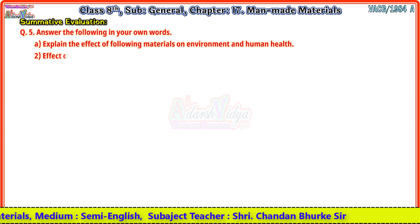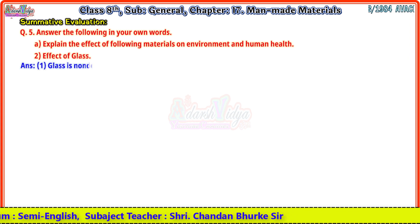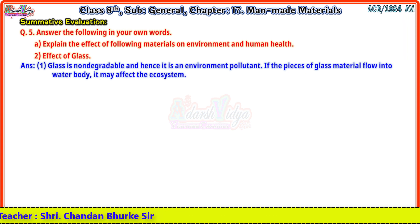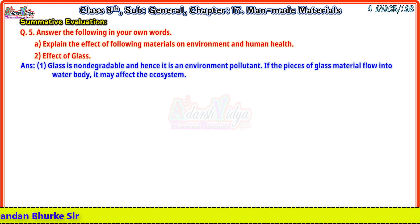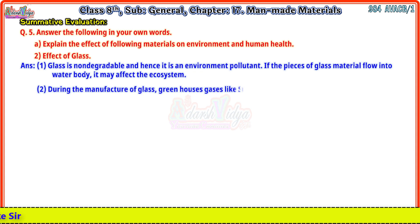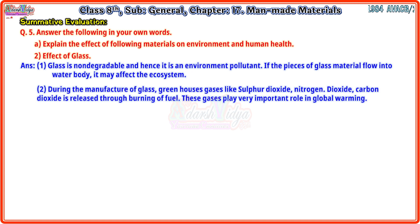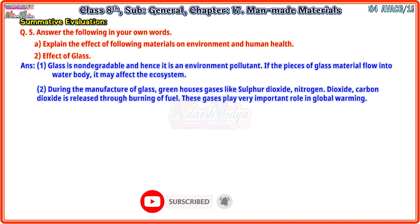Second: Effect of glass. (1) Glass is non-degradable and hence is an environmental pollutant. If pieces of glass material flow into a water body, it may affect the ecosystem. (2) During the manufacture of glass, greenhouse gases like sulfur dioxide, nitrogen oxide, and carbon dioxide are released through burning of fuel. These gases play a very important role in global warming.